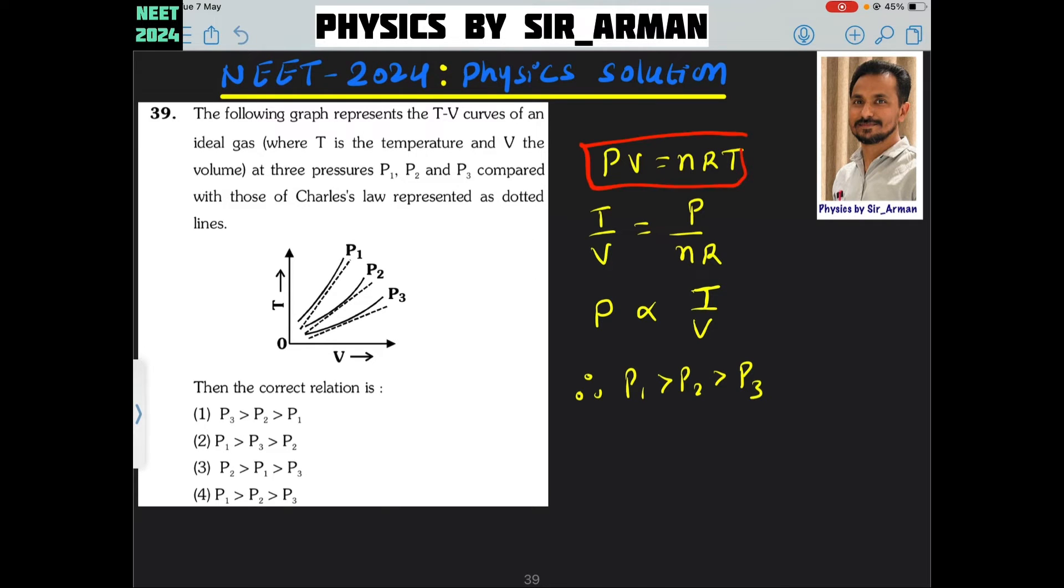From the ideal gas equation PV = nRT, all the slopes which are given are for the T by V graph. We can bring V to the other side, so it becomes T by V.